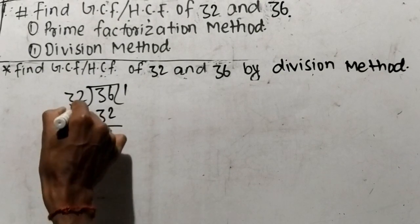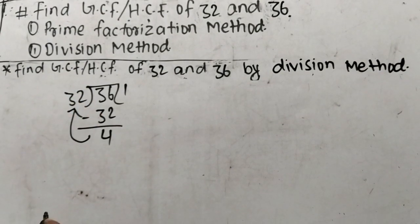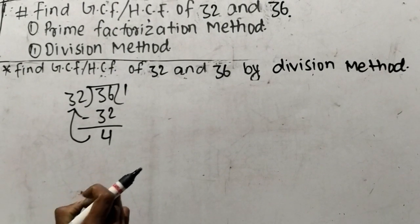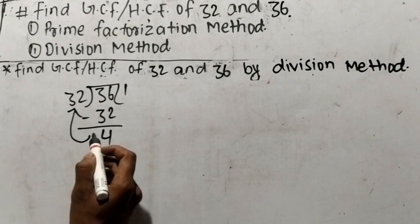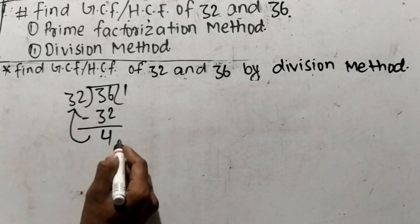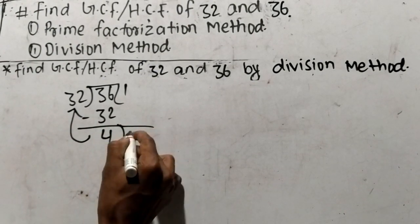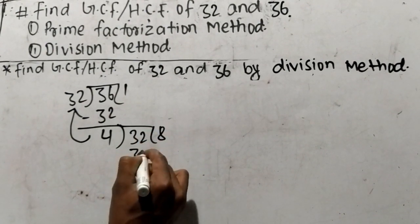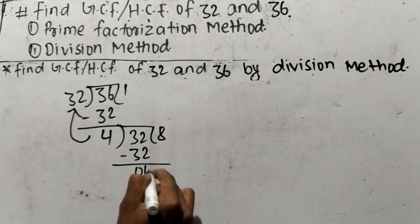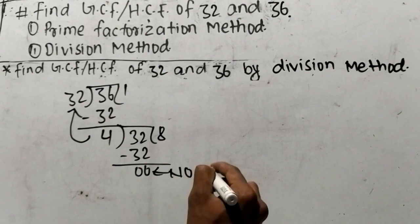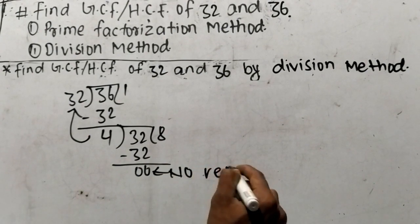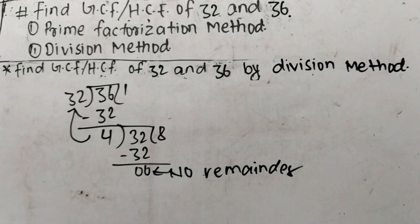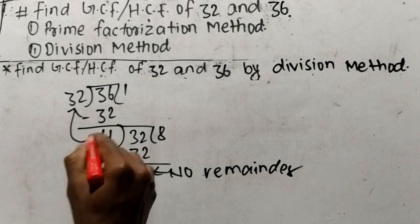Therefore we have to divide the divisor 32 with 4. While finding out GCF or HCF by division method, when the remainder comes, then we have to divide the divisor with the remainder. So 4 divides 32, and it is 4 times 8 means 32. So at last we have here no remainder, so no remainder is taken out by the divisor 4.